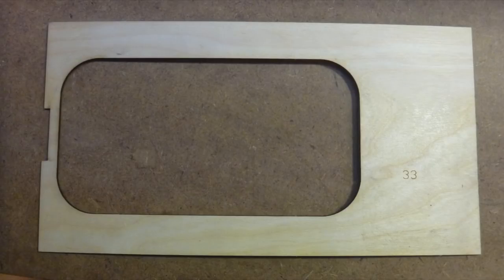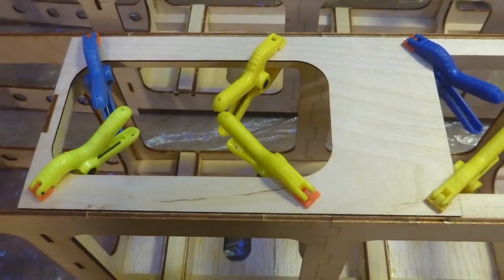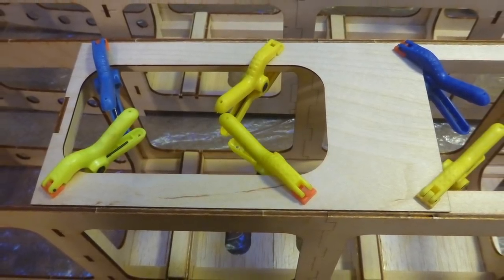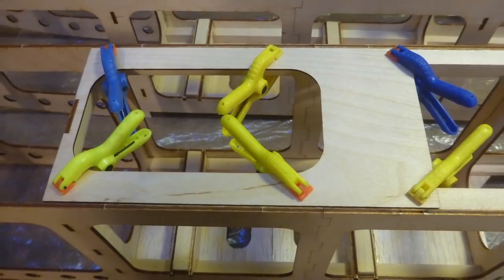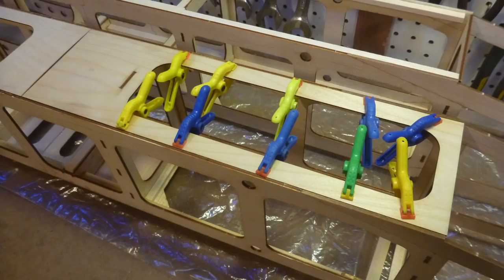Locate part number 33, glue it into place, in the forward part of the center section of the fuselage, making sure it's flush with the fuselage sides. Then locate part number 34 and glue it directly behind 33.